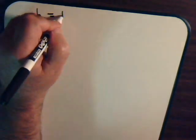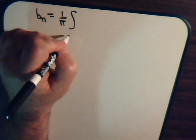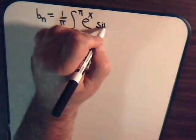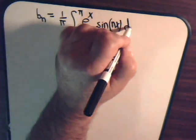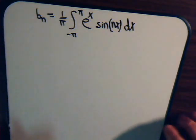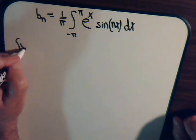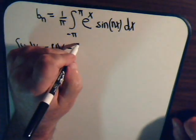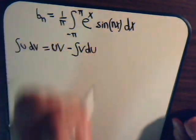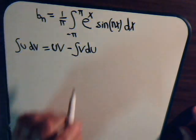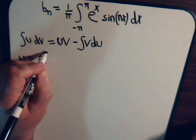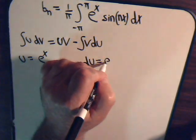b sub n is one over pi times the integral from minus pi to plus pi of e to the x times sine of nx dx. Again, we are going to integrate this by parts, where the integral of u dv equals uv minus the integral of v du. Here, we call u equals e to the x, so du equals e to the x dx. And dv equals sine of nx dx.